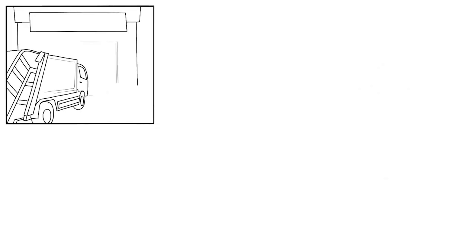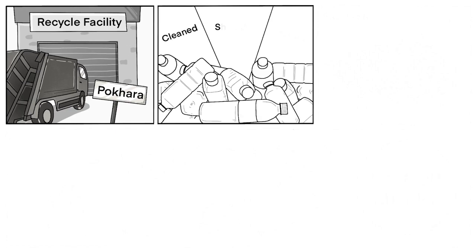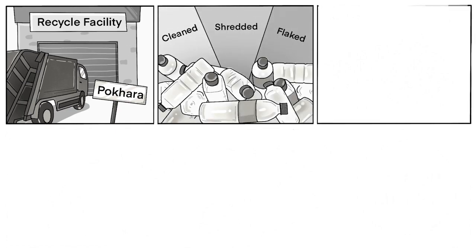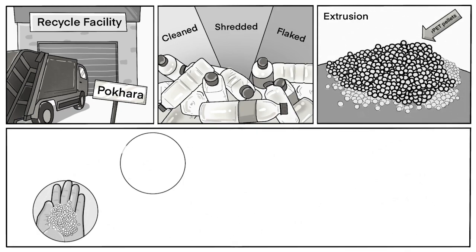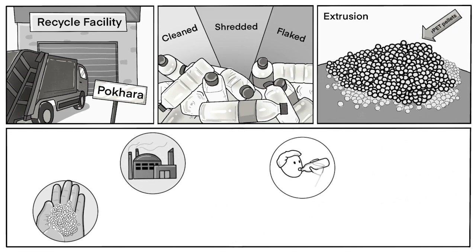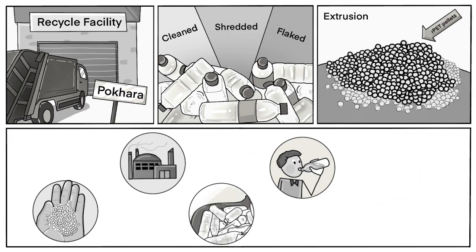The collected PET bottles arrive, are cleaned, then shredded and flaked, before being extruded and sliced to form RPET pellets. These are then sold to bottlers to be used for new bottles, for water and other drinks. This way the plastic can go round and round and round.